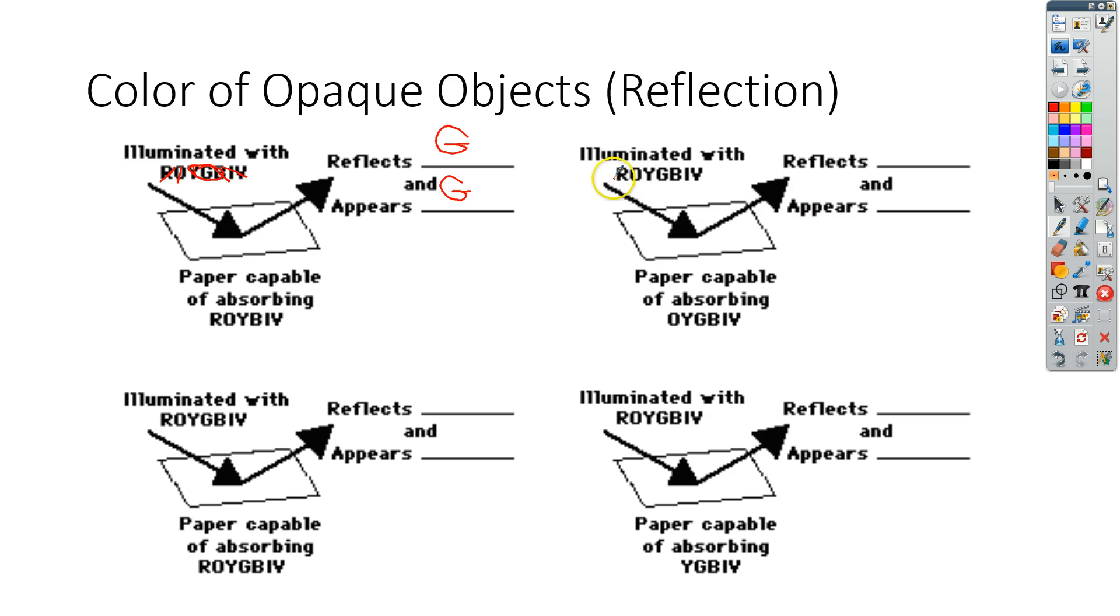For the very next one, we've got red, orange, yellow, green, blue, indigo, and violet. So this is white light again. And this paper is capable of absorbing all of the letters at the very end, except for red. So we can cross all those off. So this one will actually reflect red, and it will appear red because it reflects that red.